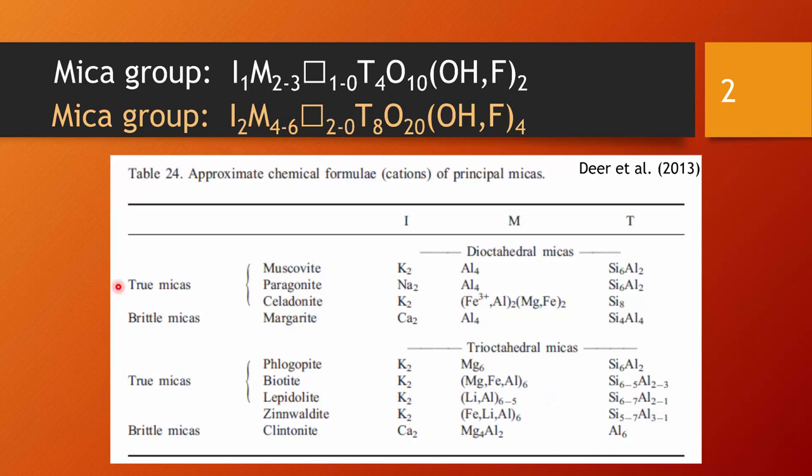We see here furthermore a subdivision into true micas and brittle micas. The brittle micas are all those micas that contain calcium on the I position. If you introduce calcium on the I position you will have to change the aluminum silica ratio for charge balance. If you increase the ratio of aluminum to silica, the micas become more brittle; they break more easily compared to the more elastic true micas which respond to stress by bending rather than breaking.